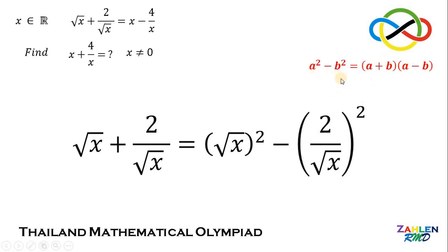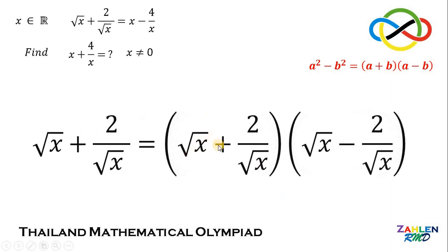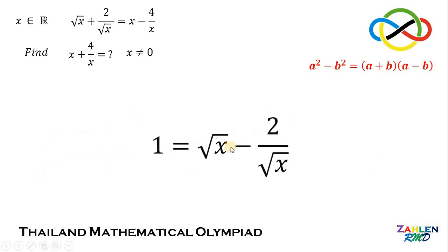If we have a squared minus b squared, it is equivalent to a plus b multiplied by a minus b. Therefore, the right-hand side of our equation can be written in that factored form. Now, if we divide both sides by square root of x plus 2 over square root of x, this term cancels out. Thus, we have 1 equals square root of x minus 2 over square root of x.